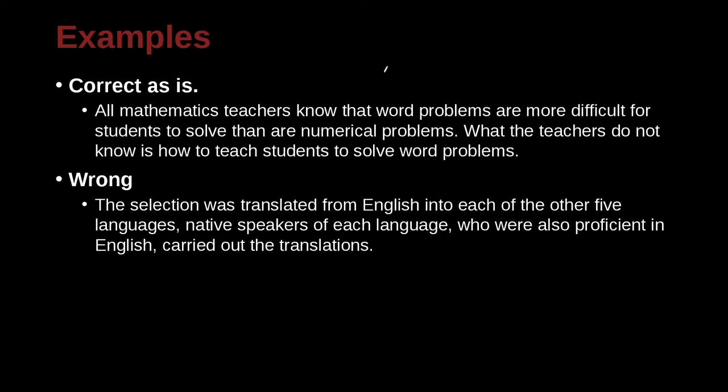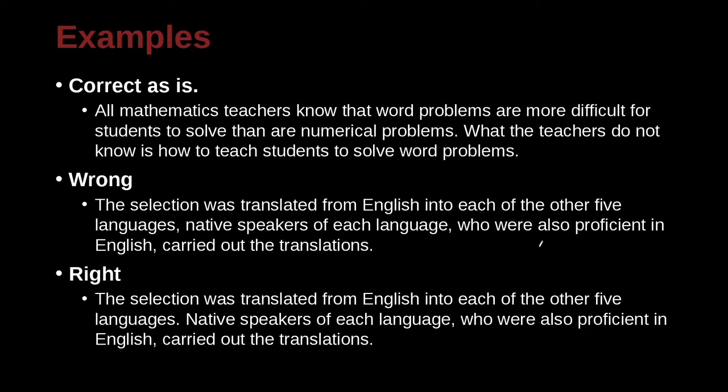Let's look at some examples where we can clearly see what's wrong. The selection was translated from English into each of the other five languages, native speakers of each language, who were also proficient in English, carried out the translations. Now here we see a number of commas jammed in here, which actually make the reading understanding a little bit difficult. Let's look at the correct sentence. The selection was translated from English into each of the five languages, period.